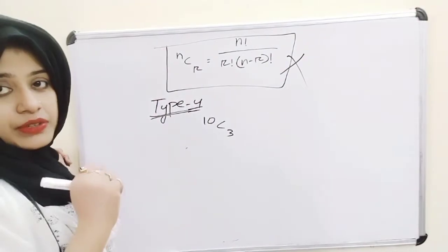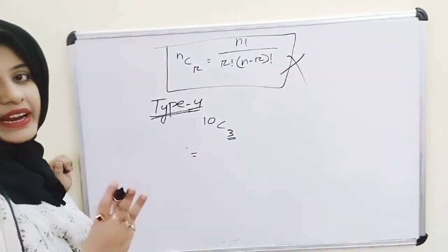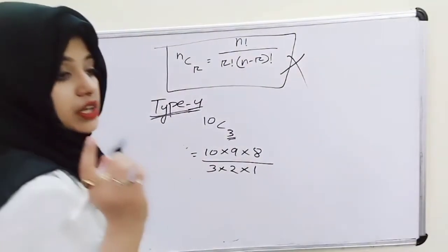Type 4: suppose the question is 10C3. Here the difference is not 1, so we can't apply Type 3. Notice that r is 3, so write 3 factors counting down from n: 10 × 9 × 8, divided by 3 factorial, which is 3 × 2 × 1.